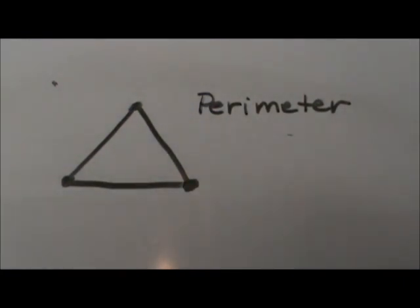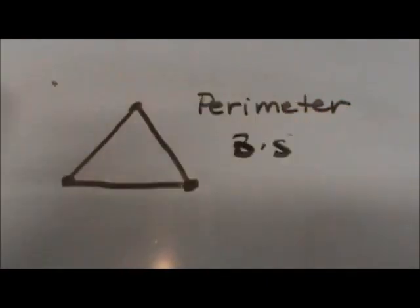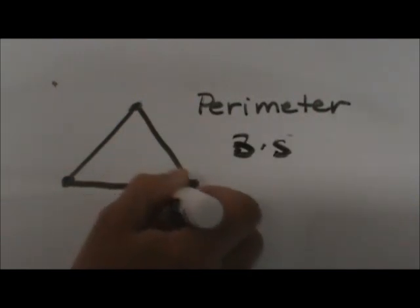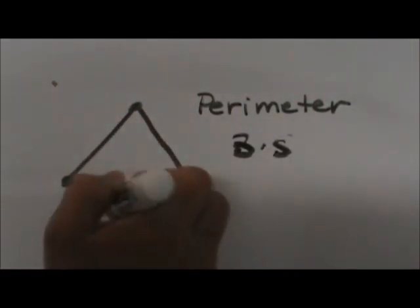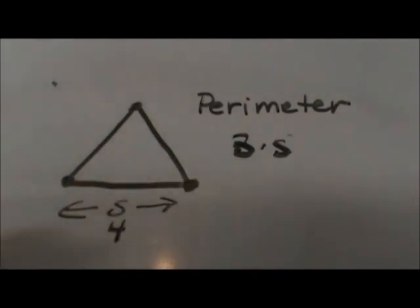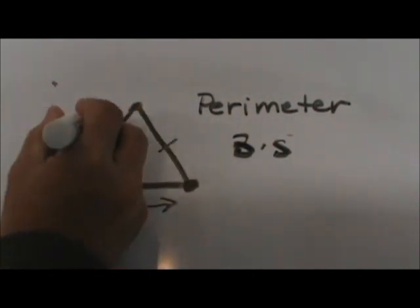First we're going to try the easy approach which is we're just going to take 3 times s where s is equal to the length of one side of an equilateral triangle. So if an equilateral triangle has a side of 4 we know that all three sides have to measure 4 because that's what an equilateral triangle is.